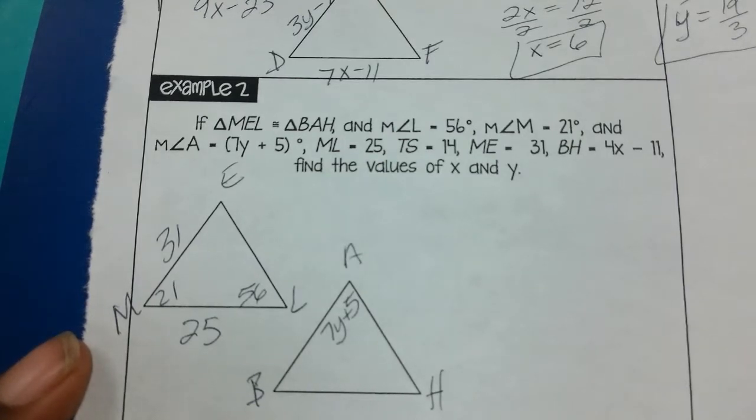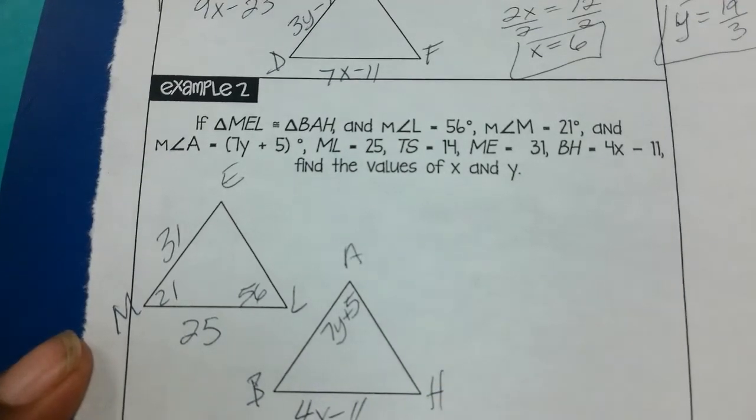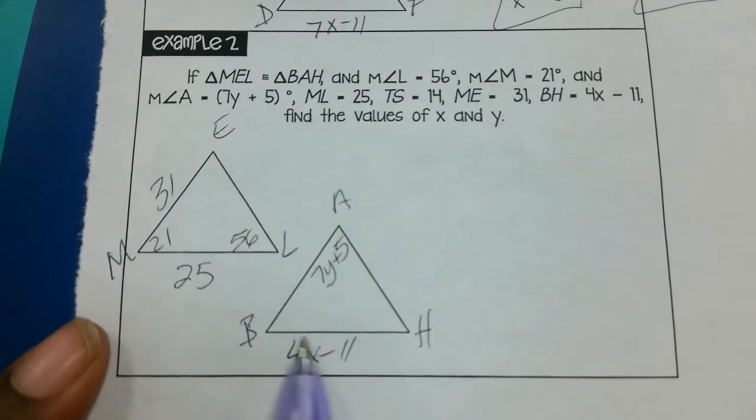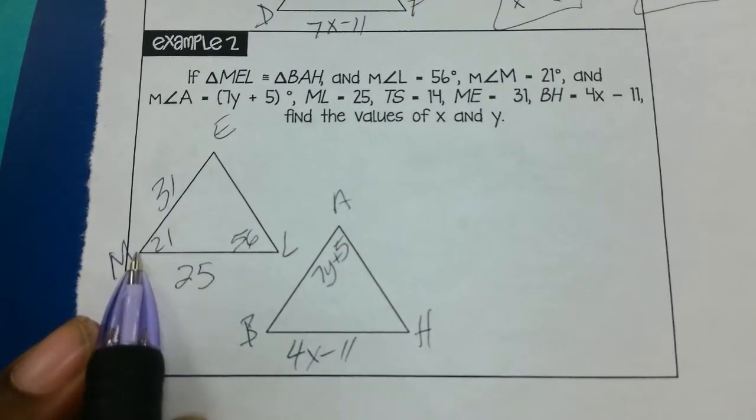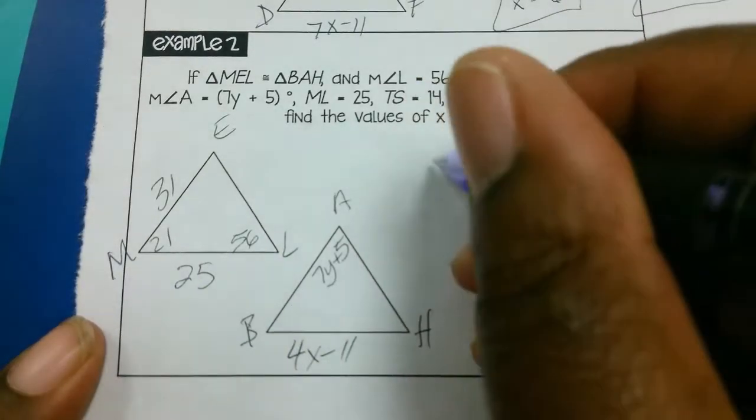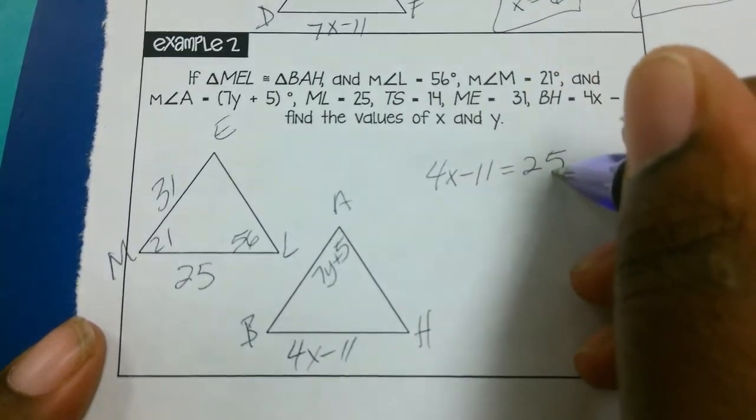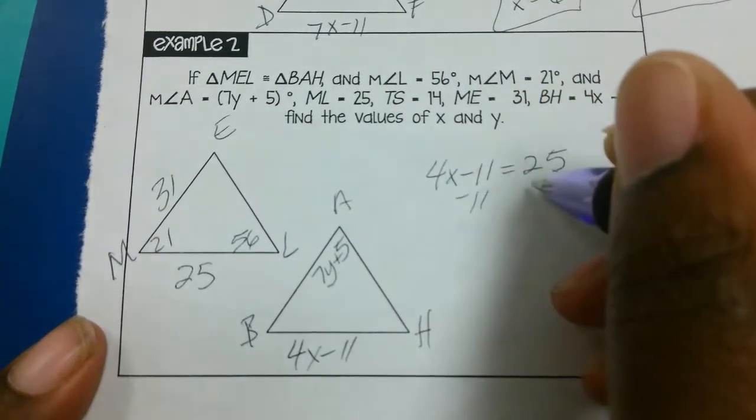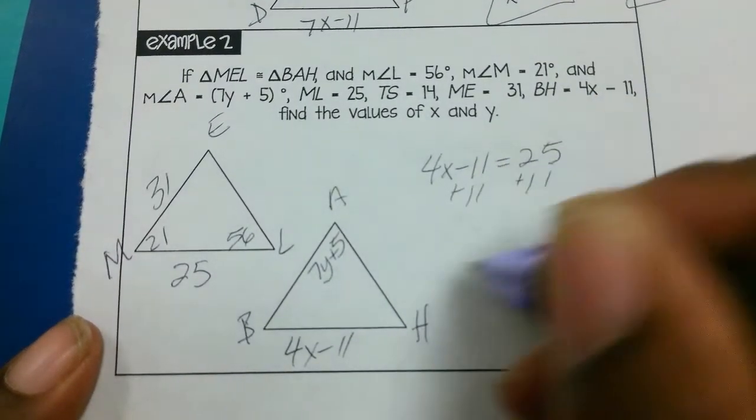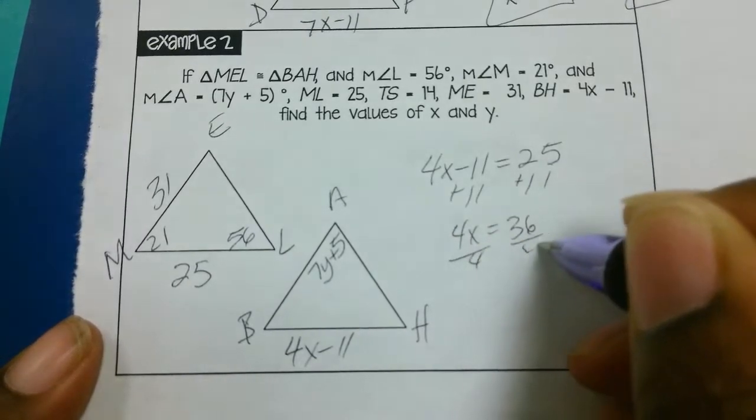And then they told us that BH is 4x minus 11. So I need to solve for x and y. I see my x is right here at BH, so I'm going to have to use segment BH. I know that ML is the one that corresponds to it, so those two are equal. So I can say 4x minus 11 equals 25. Add 11 to both sides: 4x equals 36. Divide by 4: x equals 9.